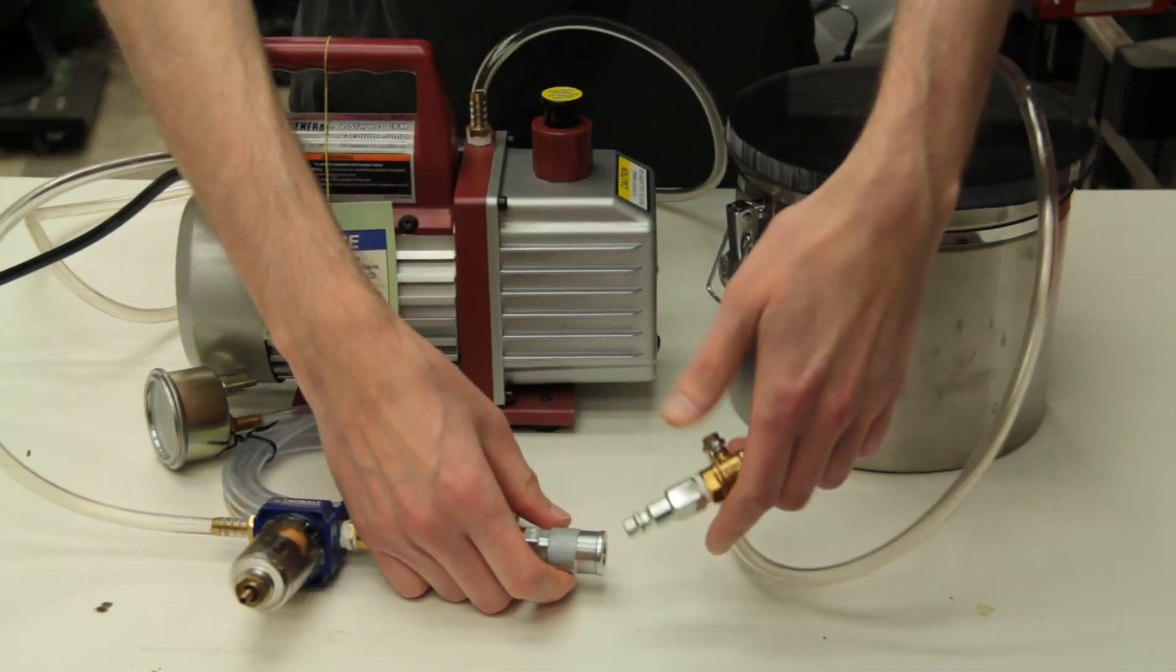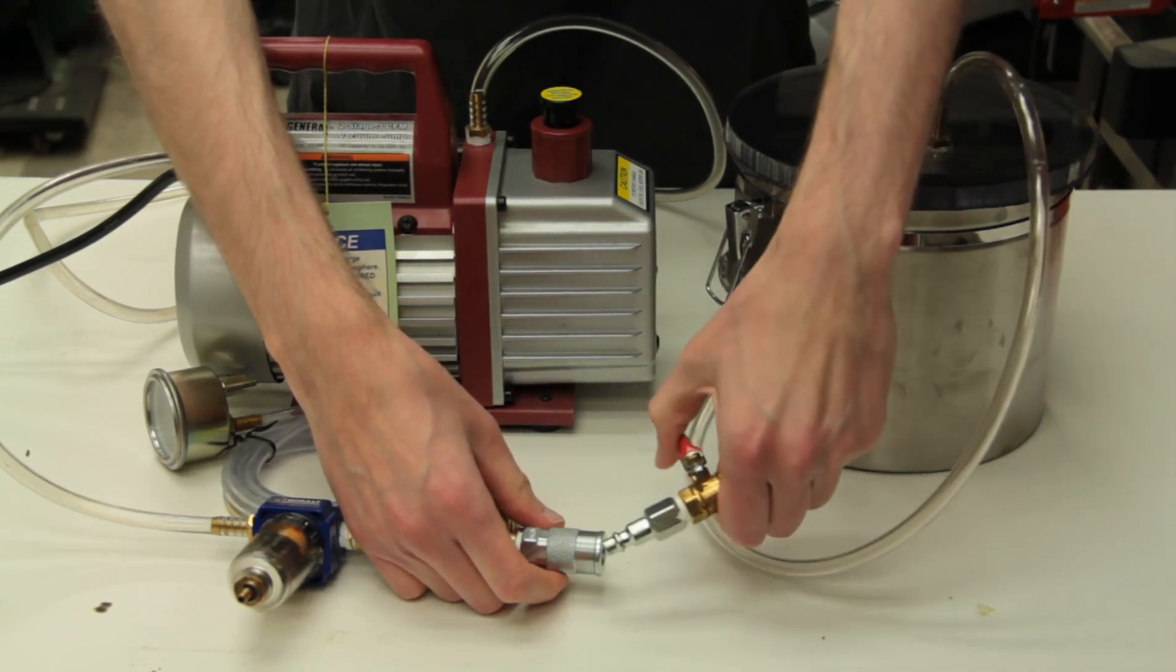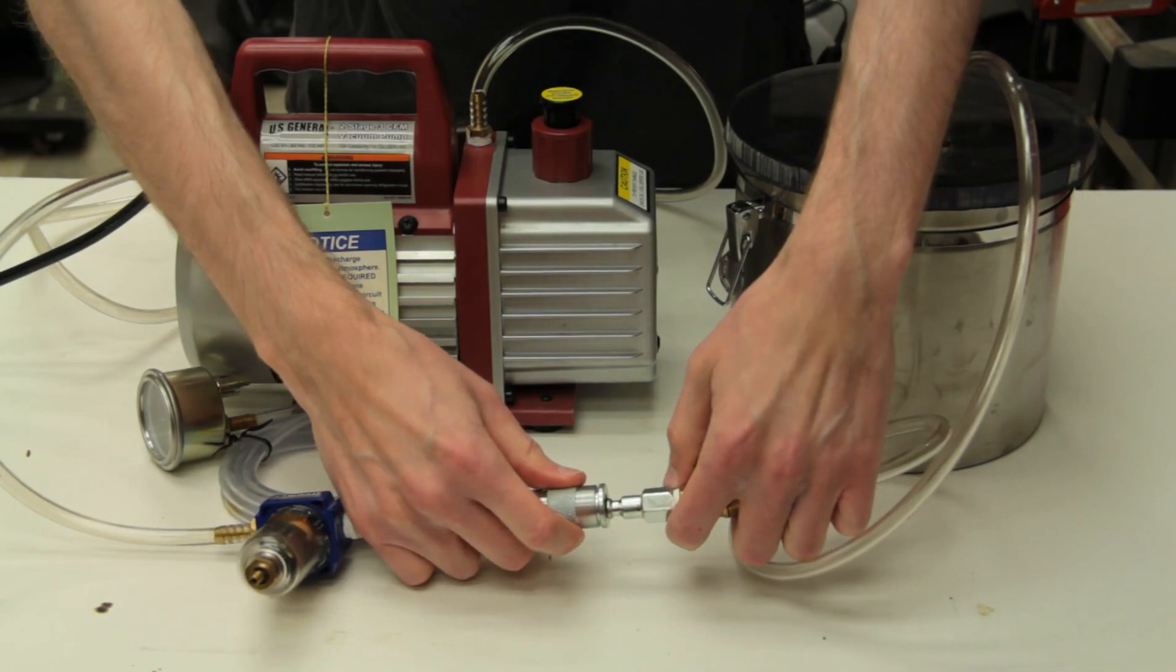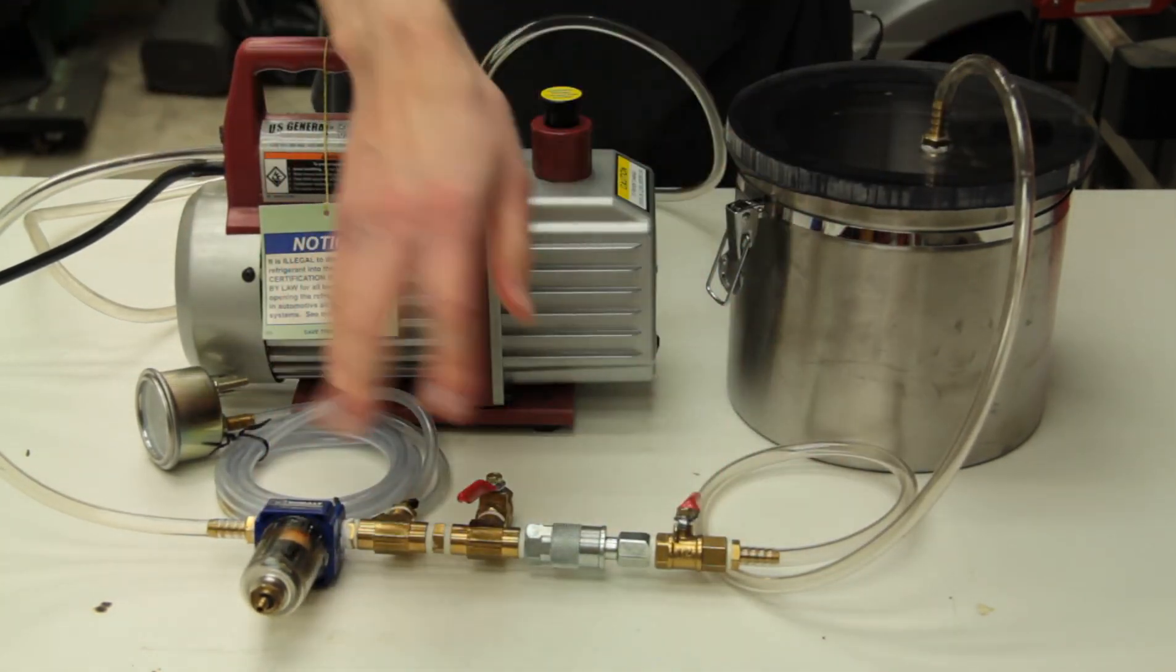Here, I installed a quick disconnect and there's a separate cut off valve for the chamber. So, you could draw vacuum on the chamber, shut the valve, and then take it somewhere if that was necessary. But, you really don't need it.